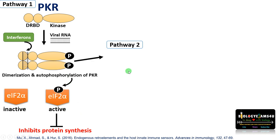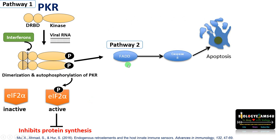PKR can also act independently without EIF2α. Phosphorylated PKR can activate FADD, which is FAS-associated protein with death domain. FADD can further activate caspase 8, which is an apoptosis initiator that causes apoptosis or programmed cell death.